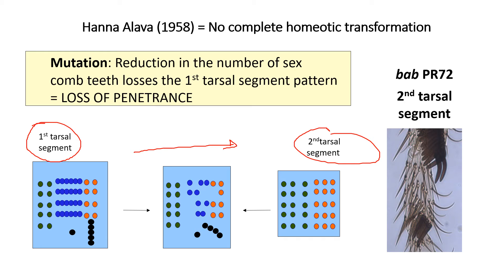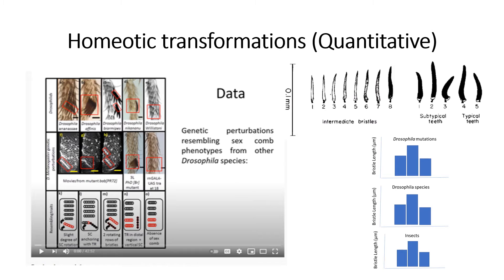However, when you have a homeotic transformation, you are turning the first tarsal segment into something different - for example, into a second tarsal segment. You find a lot of intermediate stages, and those intermediate stages look like other Drosophila species.